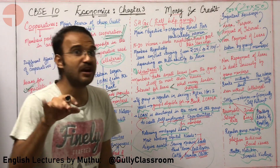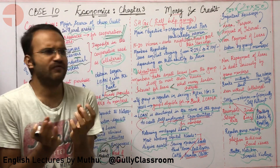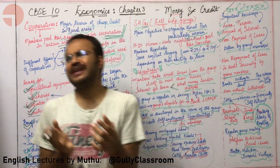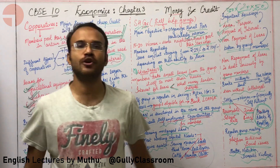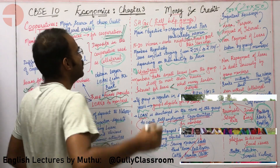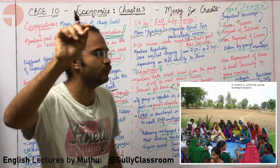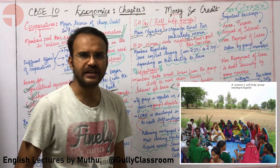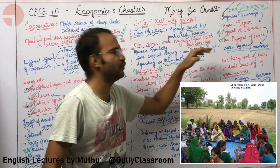Self-help groups (SHGs) are similar to cooperatives but they help women in rural areas. Women working in rural areas typically save only 25 to 100 rupees per day. SHGs organise the rural poor, particularly women — 15 to 20 women from the same neighbourhood pool their resources, saving 25 to 100 rupees daily depending on their own capacity.